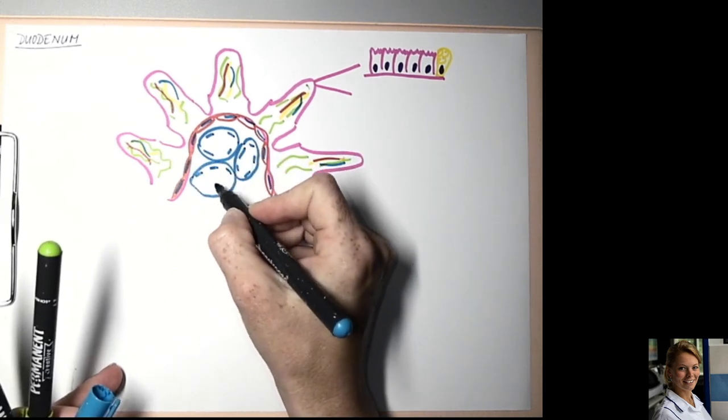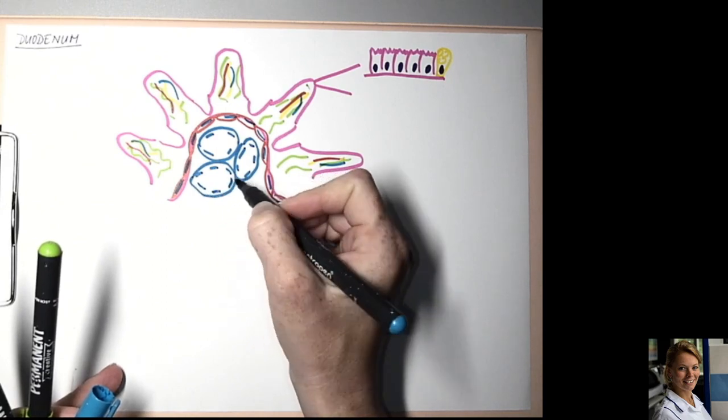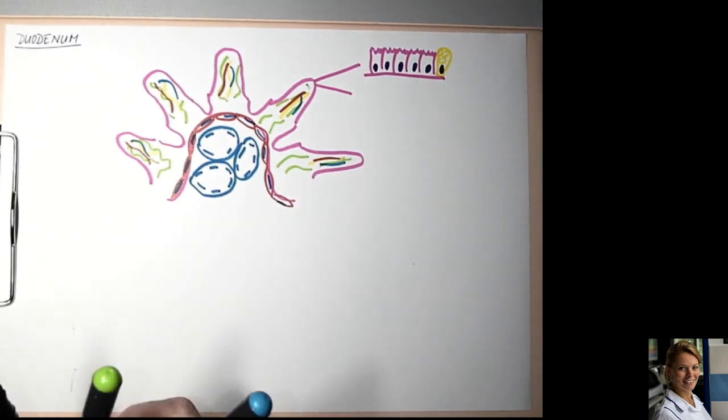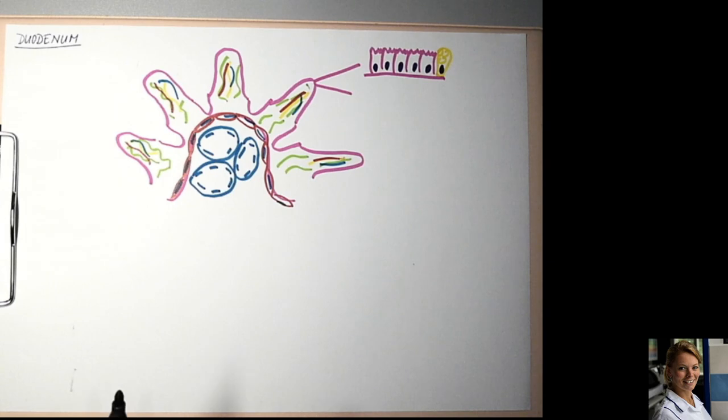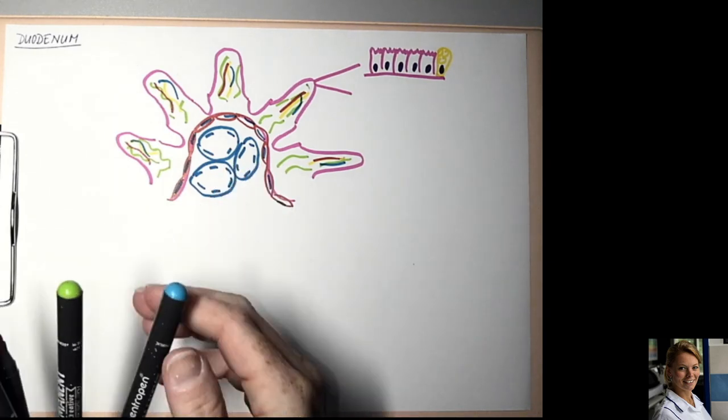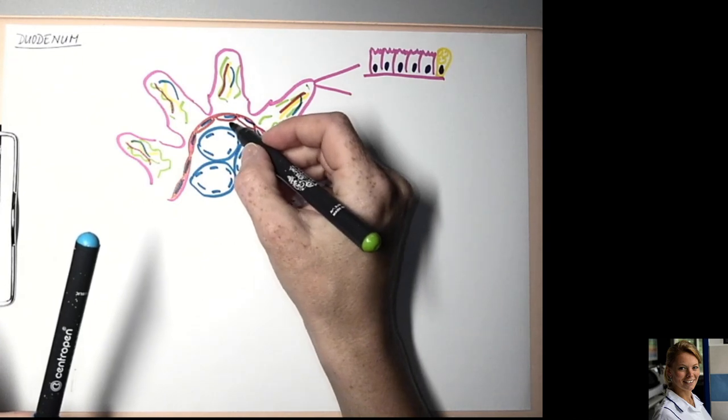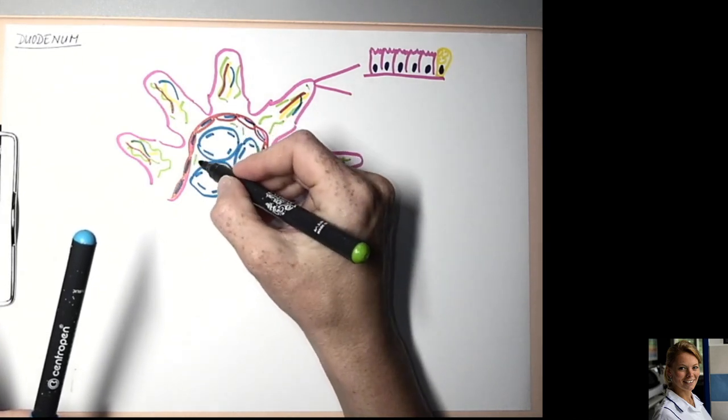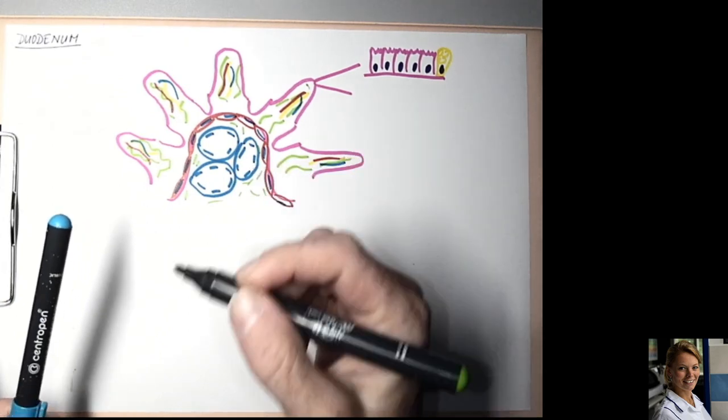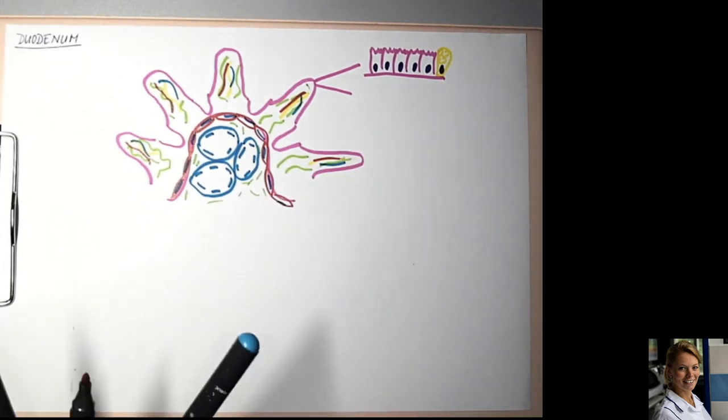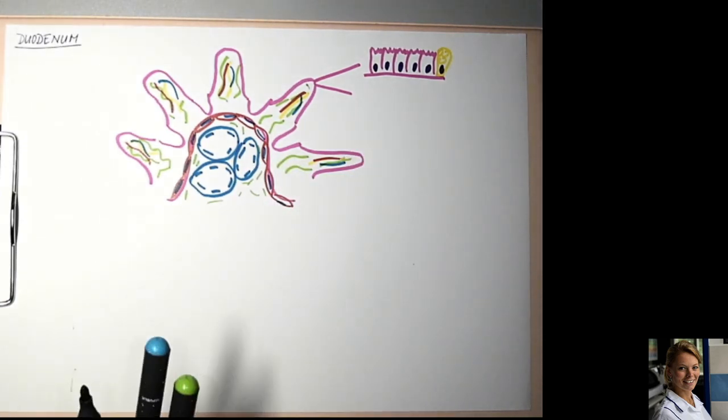The folds of the duodenum are full of Brunner's glands. Between the mucosal glands we can find loose connective tissue which forms the submucosa.